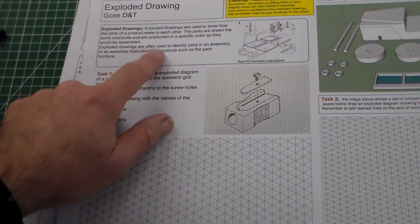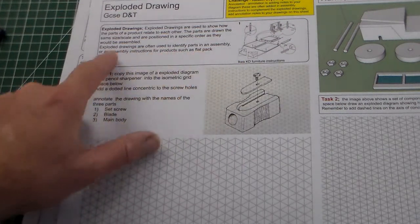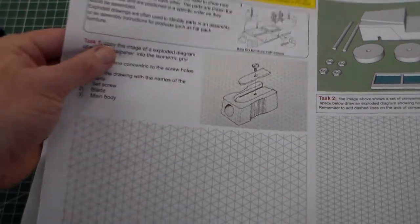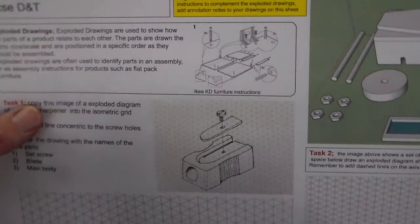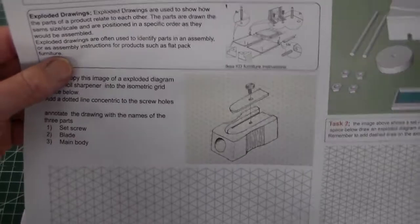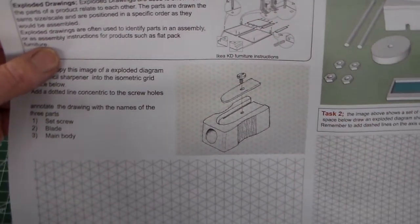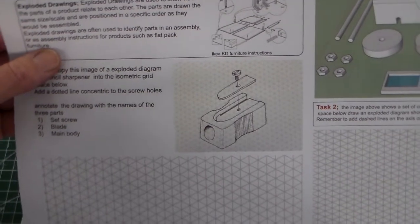Exploded drawings are often used to identify parts in an assembly or assembly instructions for products such as flat pack furniture. We can see there that there is a little drawing. These drawings show the parts of an assembly in relation to each other, often how they are assembled.